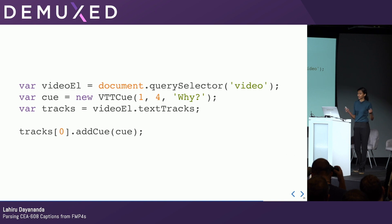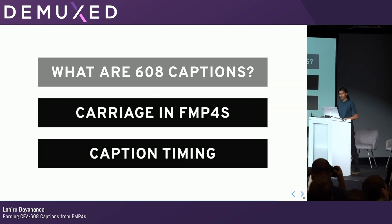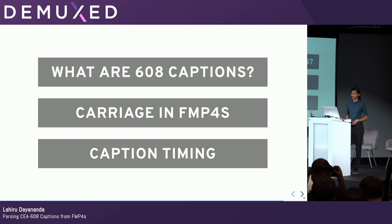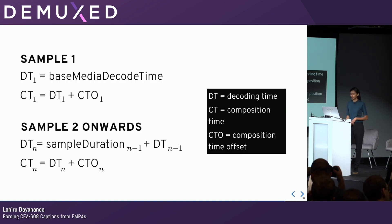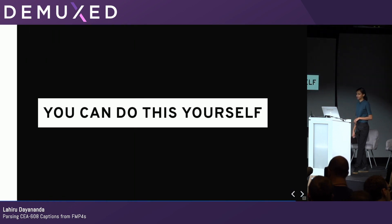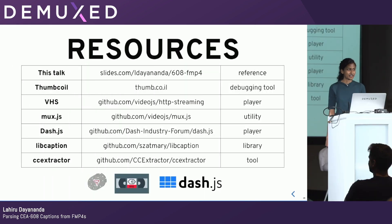Congratulations! At this point, we finally have a caption. We've gone over what 608 captions are, how they're carried in FMP4s, and how to get the caption timing — which, if you care, here's the formula. I'll give you a few seconds. And hopefully now you can do this yourself. But you're not alone — here are some resources that should help. Thank you very much.